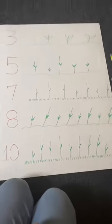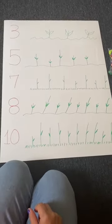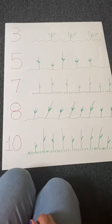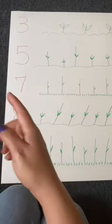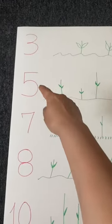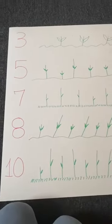Hello friends, here I have another activity. It's called 'How Many Flowers Do We Have.' As you see, I have different numbers here: I have the three, the five, the seven, the eight, the ten. And what I did is I drew a little garden next to each number with the same amount of flowers.